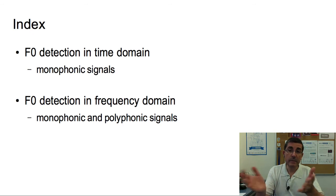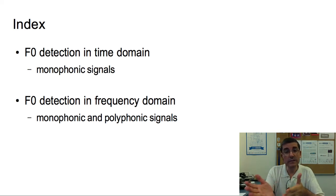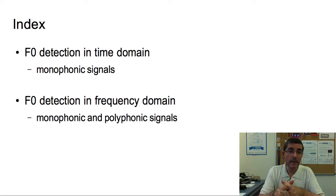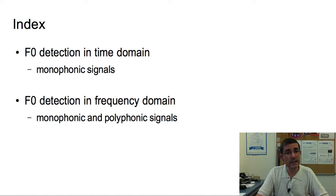Many methods have been proposed to identify the fundamental frequency of a sound, and these methods can be grouped into ones that work directly on the time domain signal and ones that work on the frequency domain representation — the spectrum. Time domain approaches work well on monophonic signals, and frequency domain approaches can be made to work on monophonic signals, but also on polyphonic signals, which is a very important advantage of these type of approaches.